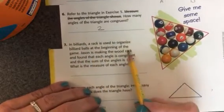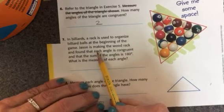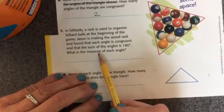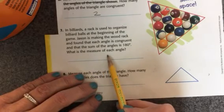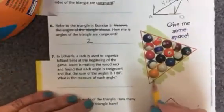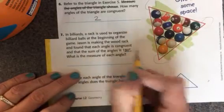In billiards, a rack is used to organize billiard balls at the beginning of the game. Jason is making the wood rack and found that each angle is congruent and that the sum of the angles is 180 degrees. What is the measure of each angle? Well, I'm going to count how many angles there are. I have one, two, three, three angles. And when I add them up, it equals 180.